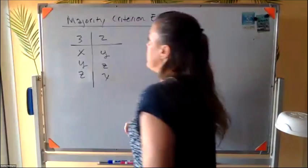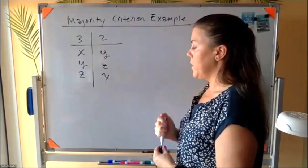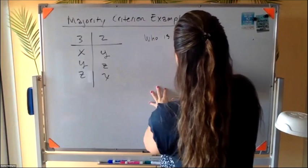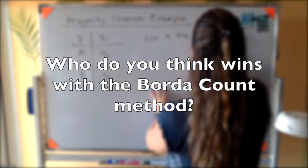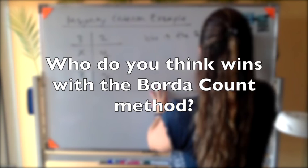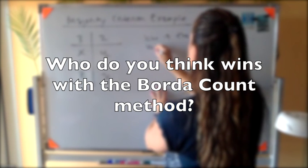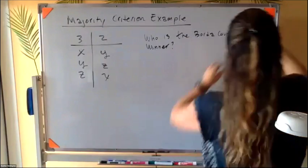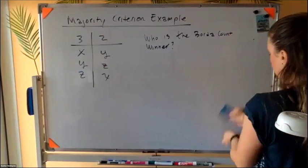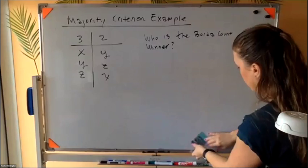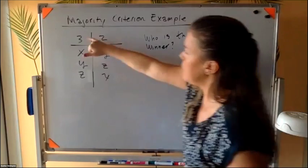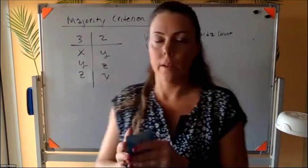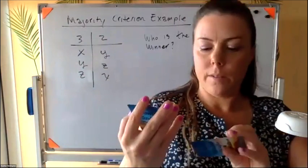Okay, so I want you guys to figure out who is the Borda count winner. You can get a head start. I'll also show you our growth mindset models for the day while you're doing that. So here we have three people voting X, Y, Z, two people voting Y, Z, X.